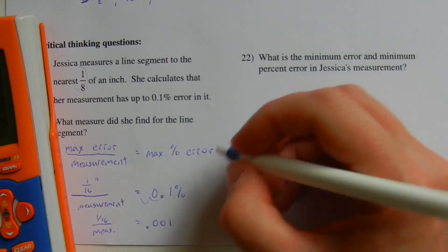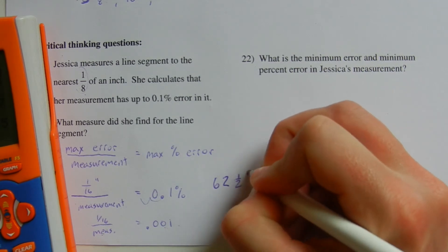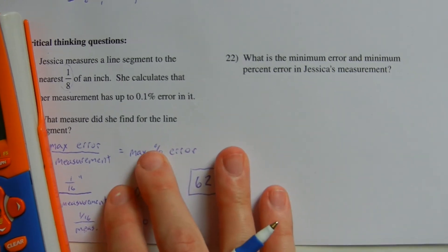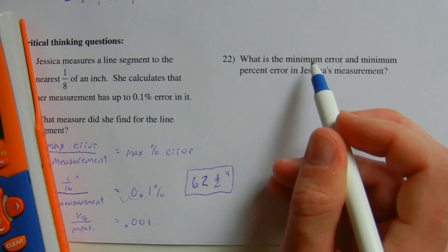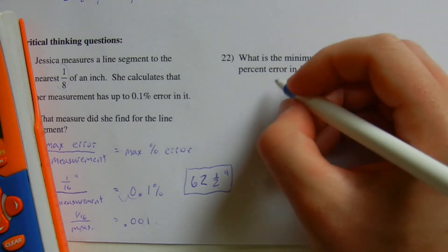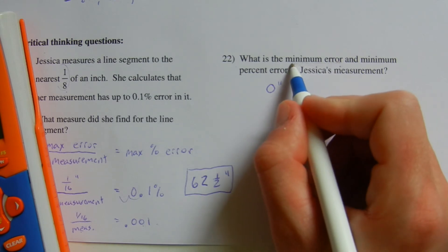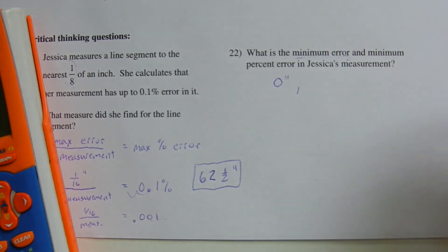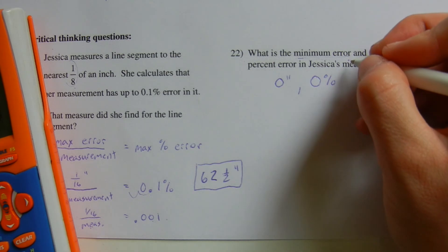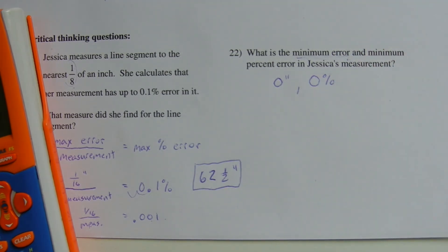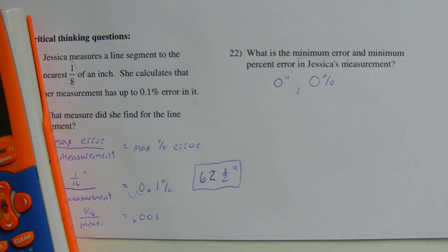So her original measurement was 62 and one half inches. Number 22 asks: what is the minimum error and minimum percent of error in Jessica's measurement? Assuming she is accurate, her minimum error would be zero inches if she were right on the mark. So the minimum error is zero inches, and therefore the minimum percent of error would also be zero percent — since zero divided by any number is zero.